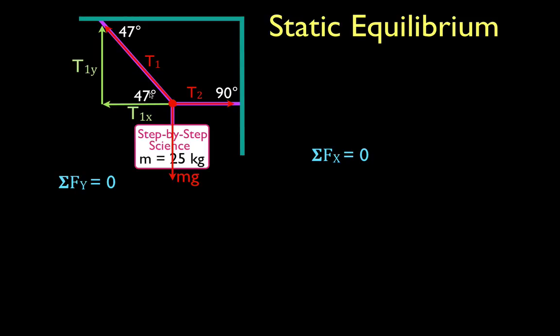The second step is simply to sum up the forces in the x and to sum up the forces in the y-direction and set them equal to zero. Now, in the x-direction, we have two forces, T2 points in the positive x-direction, T1x points in the negative x-direction. Those are the only two in the x-direction, so I'm going to write down T2 minus T1x equals zero.